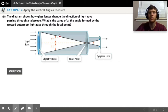We want to know what the value of x is. The angle x is formed by the crossed outermost light rays through the focal point. So basically we have two lines intersecting here, so these angles are going to be vertical angles. We know that vertical angles are congruent.